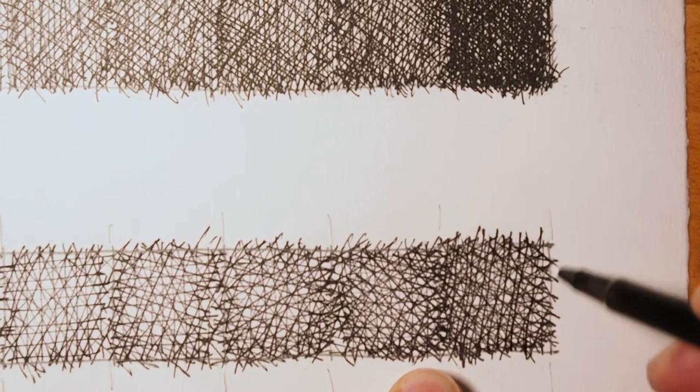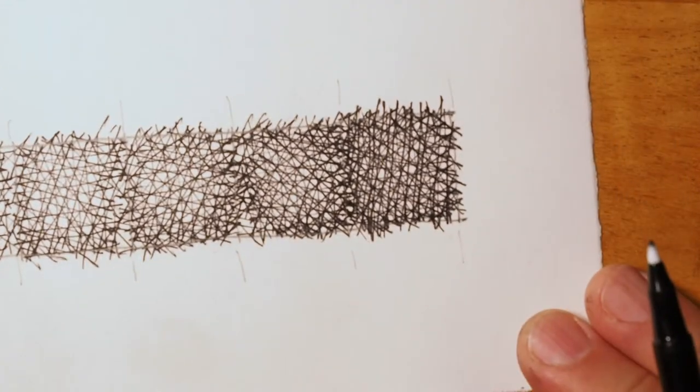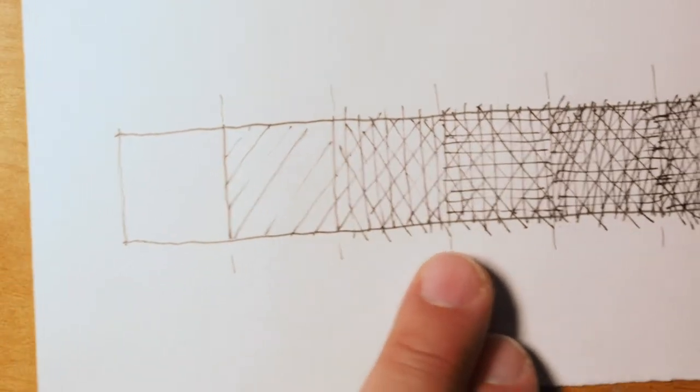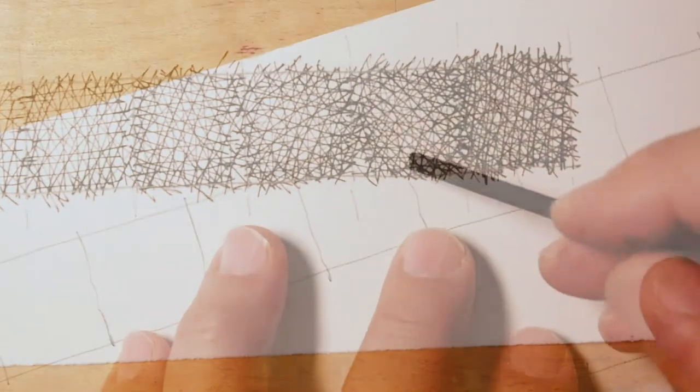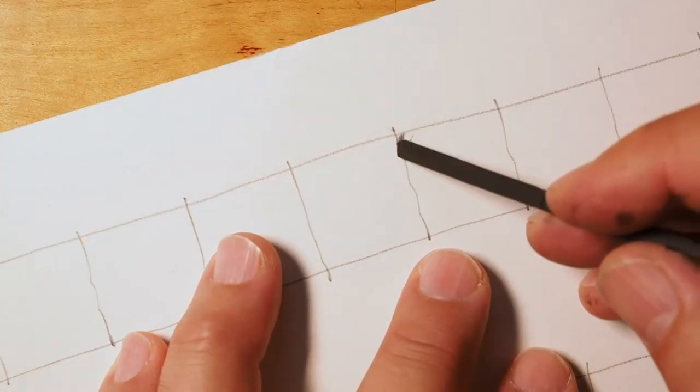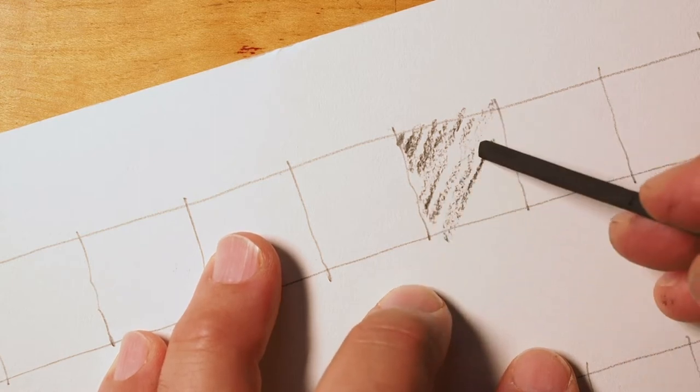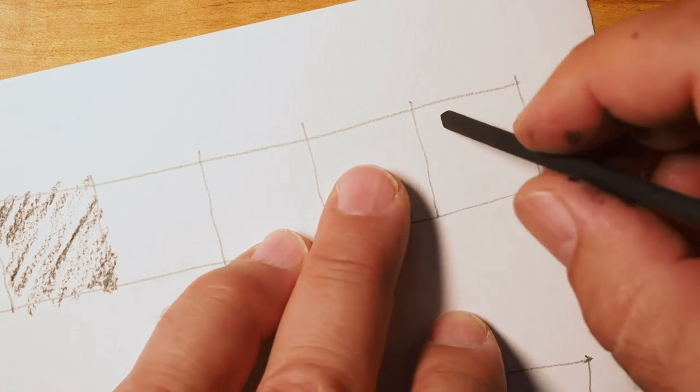This is just parallel lines. I'll switch tools and go to vine charcoal next. And I'll do it the same way. I'll start with a mid-tone and then try and make something as dark as I can, and then figure out how this material works different than pencil and pen.